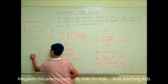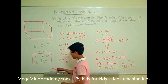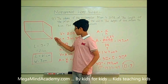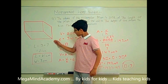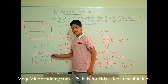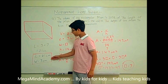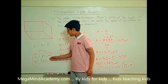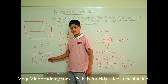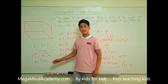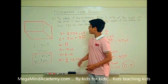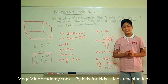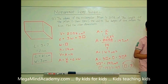So the length of this rectangular prism is 21 centimeters and the width of this rectangular prism is 7 centimeters. Today we learned about measurement word problems. Thank you for watching this video.